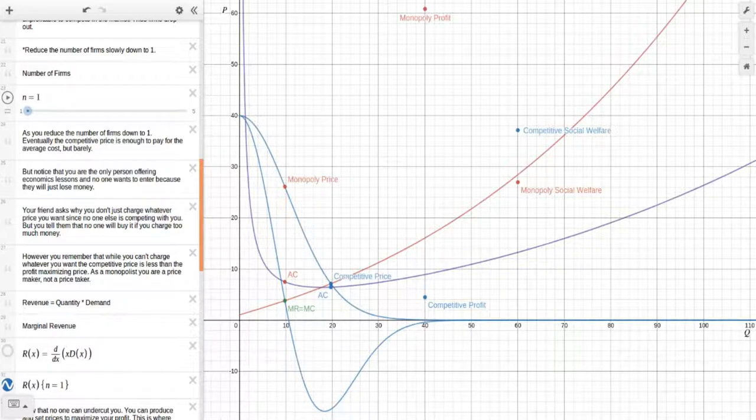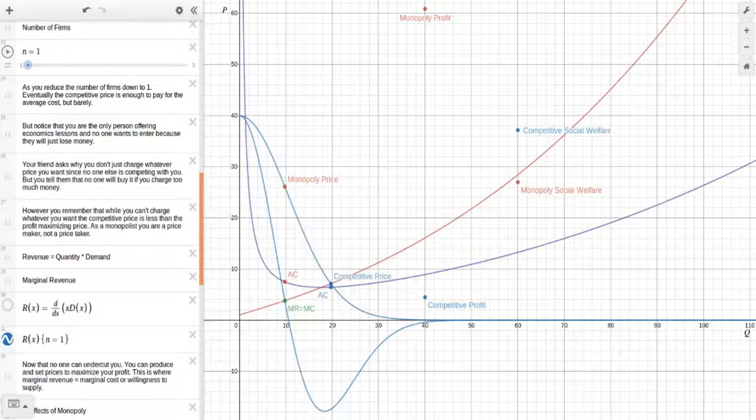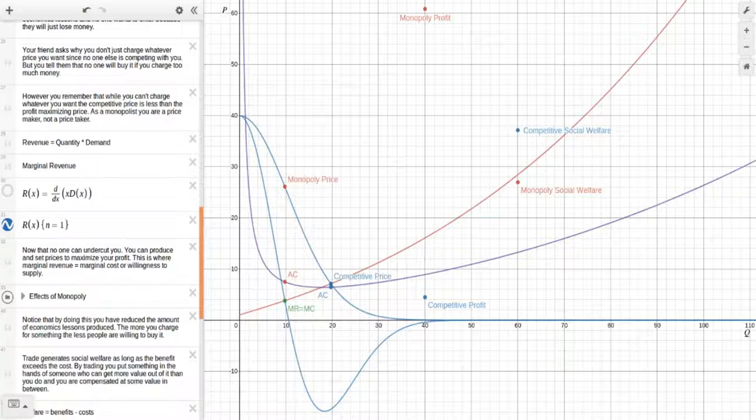So right here we have revenue and revenue is equal to the quantity produced times the demand, which is the price that people will pay for a given quantity. So we can find this curve right here, other blue curve, which is your marginal revenue, which is simply just how much you gain in revenue. This is how much it costs to produce the next unit. This is how much revenue you gain by producing the next unit. Now that no one can undercut you, you can produce and set prices to maximize your profits. This is where marginal revenue equals marginal cost, or willingness to supply. What this means right here is very simple. This curve right here shows how much money you get by producing another unit. This is how much it costs you to produce another unit. When the revenue you get, the money you earn, is equal to the costs, then that is your profit maximizing point.